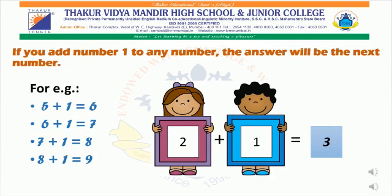If you add number one to any number, the answer will be the next number. Let us see a few examples: five plus one equals six, six plus one equals seven, seven plus one equals eight, eight plus one equals nine, and two plus one equals three.